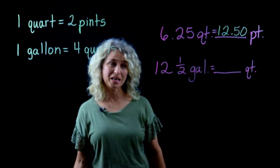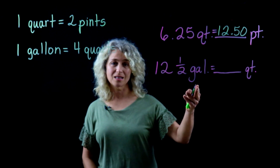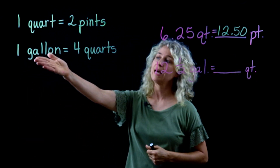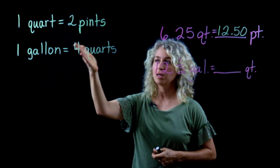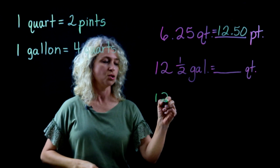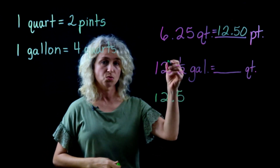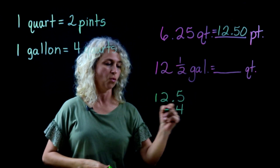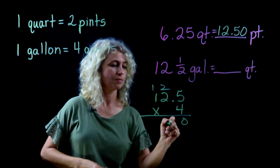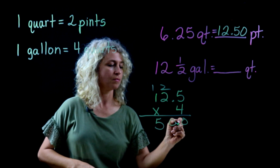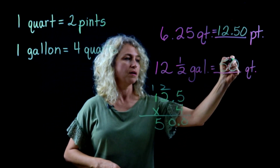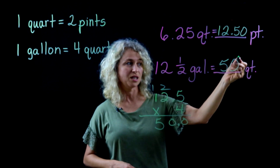Alright, this last example is 12 and a half gallons and we're changing it to quarts. We're looking at gallons to quarts and we know that there are 4 quarts in every gallon. So 12.5 means 12 and a half times 4. So 12 and a half gallons equals 50 quarts.